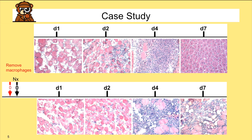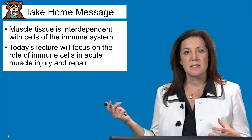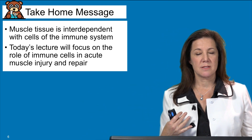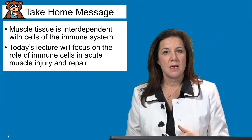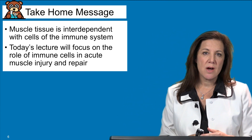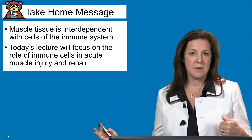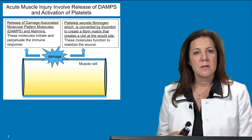This case study tells us that macrophages are very important for muscle repair, and therefore that the immune system and inflammation are actually positive for muscle repair. There is an interdependence between muscle and immune cells. I'll take you through the process of acute muscle injury and the different steps, examining how immune cells and immune mediators play a role.